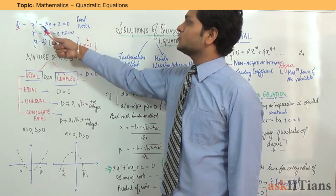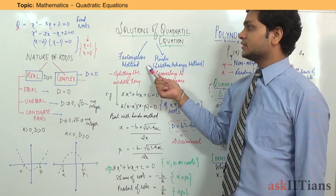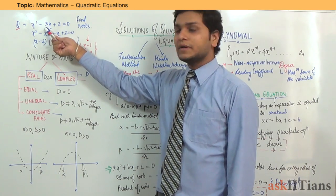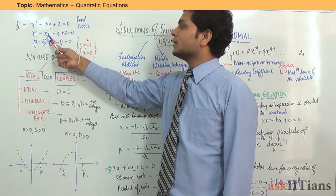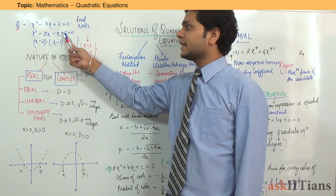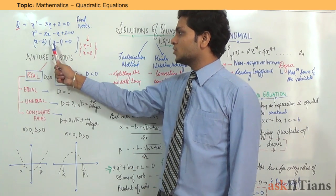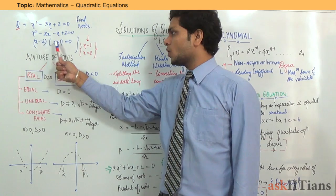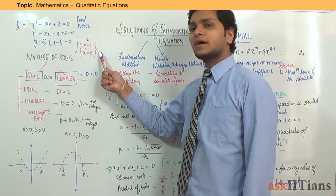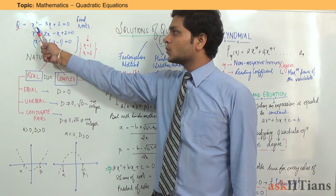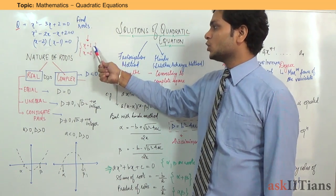Now I will do an example. Suppose we have the quadratic equation x² − 3x + 2. We have to find the roots. Using the factorization method, we split the middle term: −3x becomes −2x and −x. Taking x common, we get x(x − 2), and taking −1 common gives −1(x − 2), so we get (x − 1)(x − 2) = 0. Equating each factor to 0, we get x = 1 and x = 2. So x² − 3x + 2 gives two values of x for which it holds true: x = 1 and x = 2.